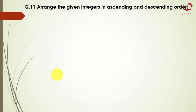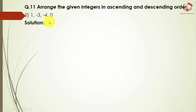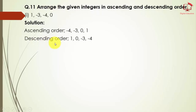This is our last question of exercise 4.1. Arrange the given integers in ascending and descending order. Ascending means writing numbers from lower to higher; descending means higher to lower. For the numbers 1, minus 3, minus 4, and 0 — the ascending order is: minus 4, minus 3, 0, and 1. The descending order is: 1, 0, minus 3, and minus 4.